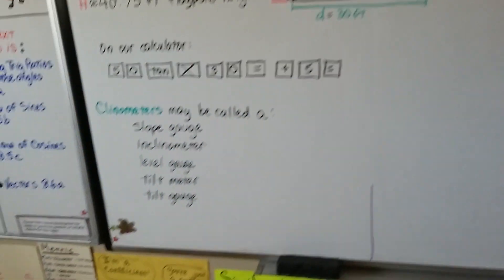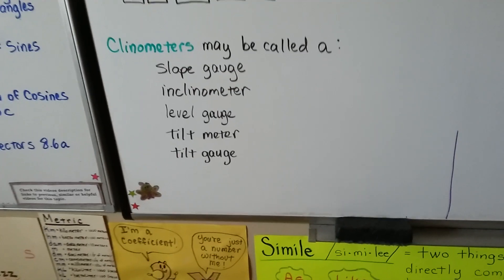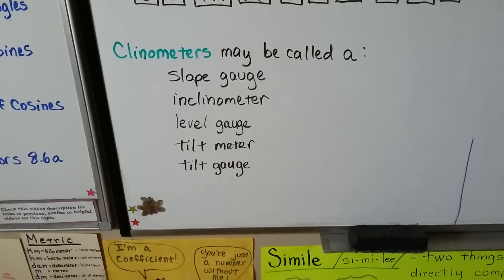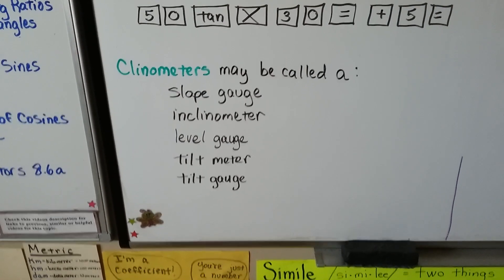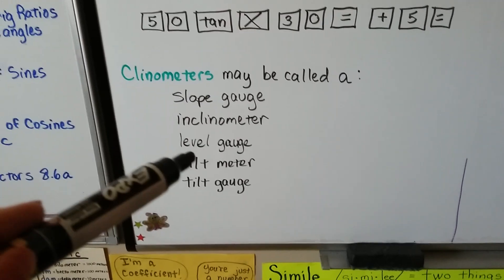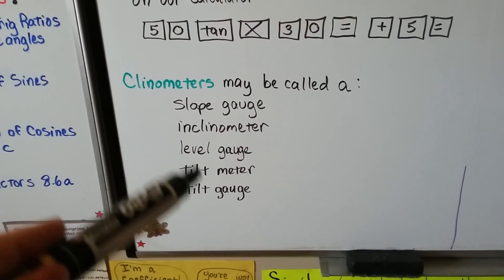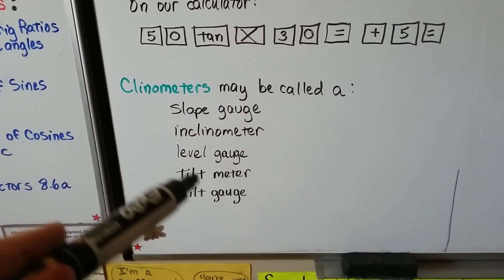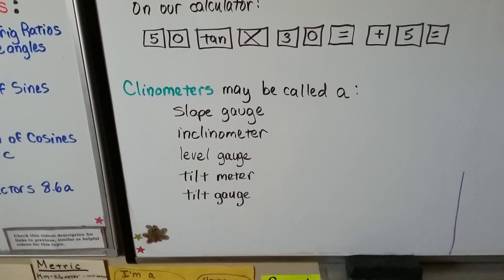And you might see clinometers called a slope gauge, an inclinometer, a level gauge, or a tilt meter or a tilt gauge. And the tilt meter tilt gauge is when they're using it to find shifts in the ground.